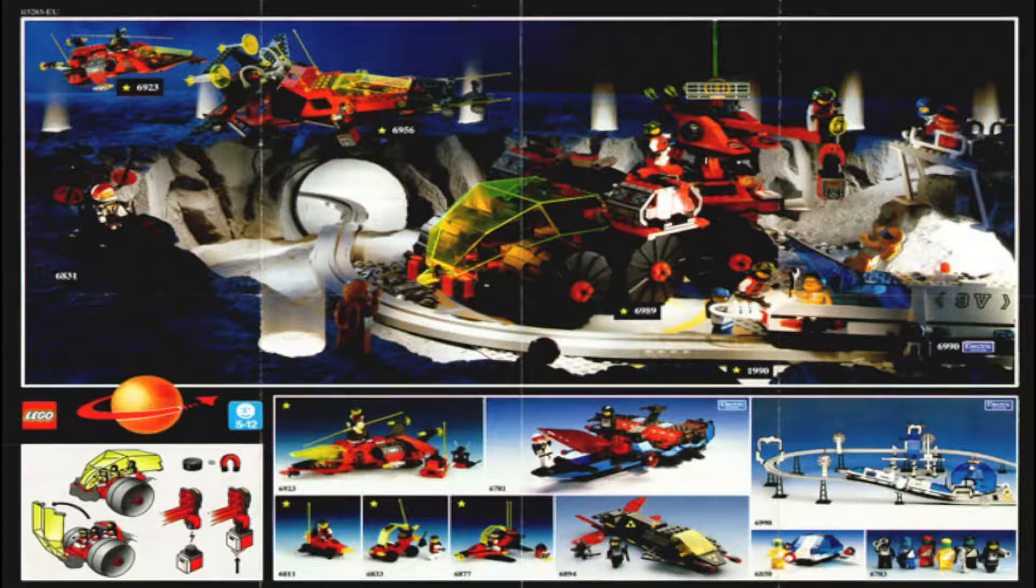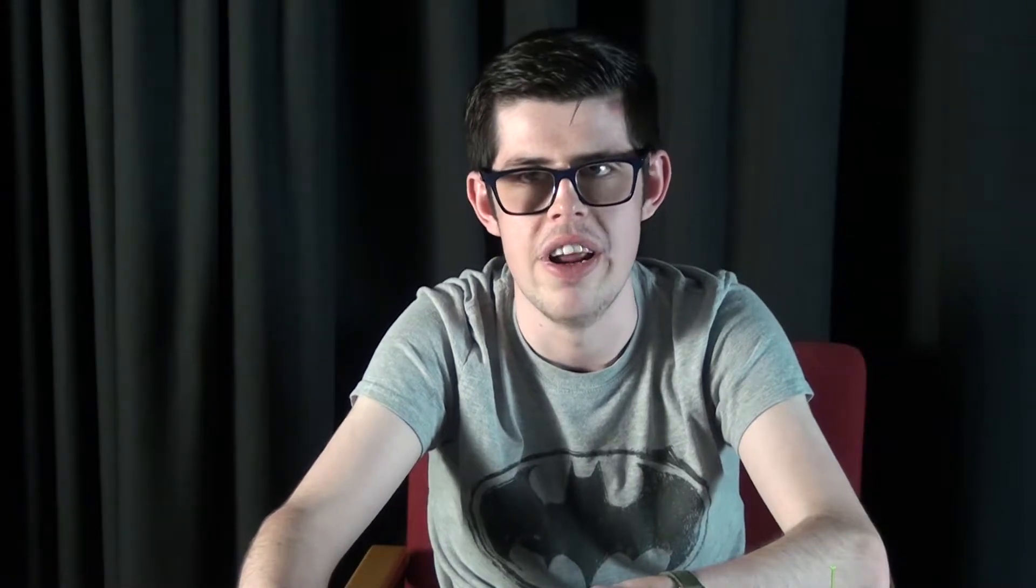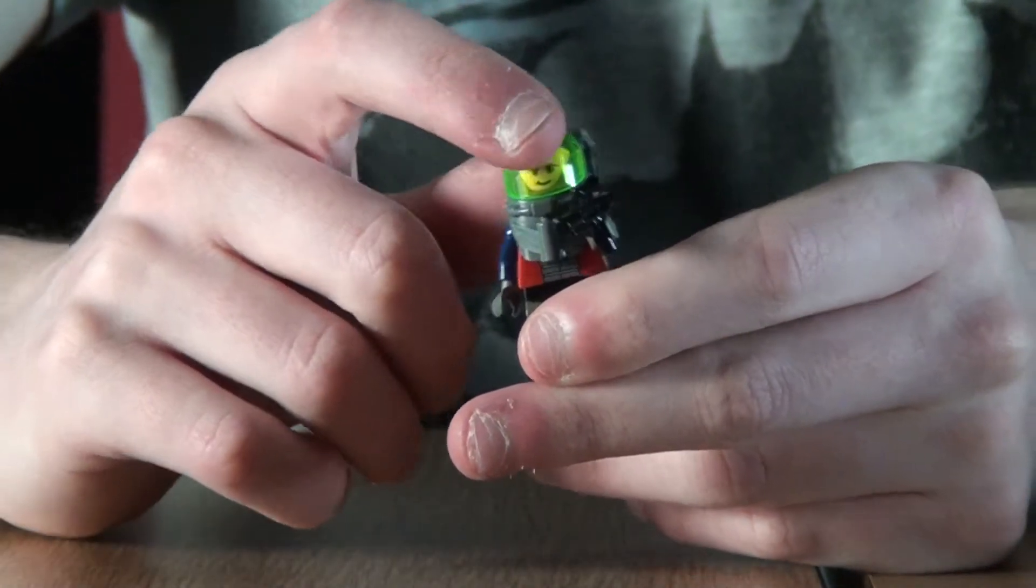He's made up of different parts and he's a reference to another sub-theme called M-Tron which was released in 1990. These were actually the civilians. You got the good guys like Space Police, then you have the civilians like Futuron or Unitron, and then you have the bad guys like Blacktron.